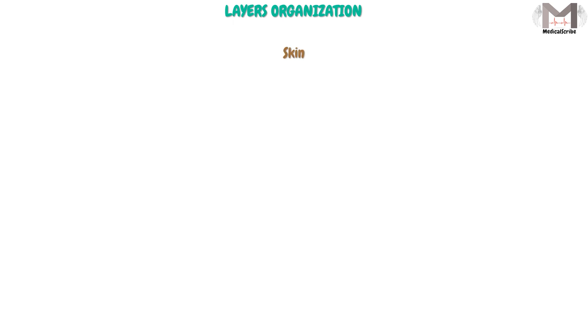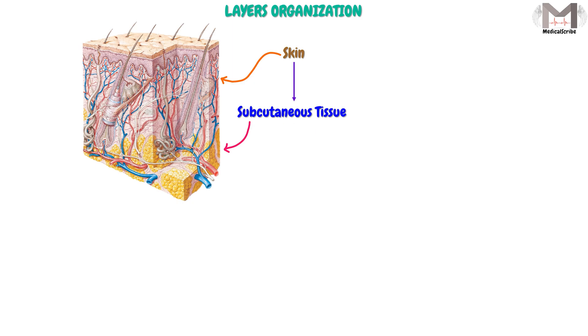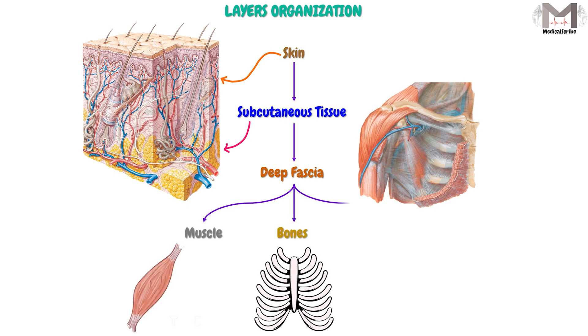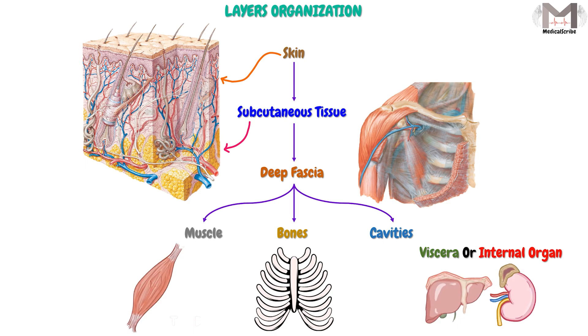Finally, the study of any region in the regional anatomy approach follows a layered organization. We begin with the skin, then descend to the subcutaneous tissue beneath the skin, then to the deep fascia covering deeper structures like muscles, bones, and cavities. The cavities contain the viscera, or internal organs. This is the methodology of study in the regional anatomy approach. See you in the second part of regional anatomy.